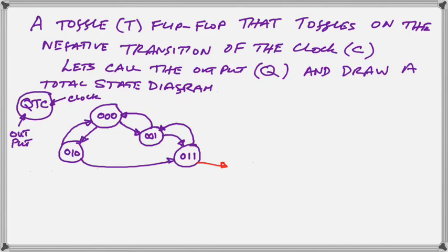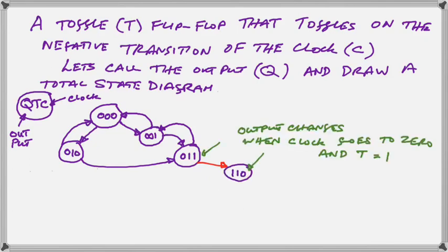So the next state that I have to draw is 110. My output has changed from a zero to a one, and my clock has gone from a one to a zero, which is the negative transition we were talking about. That should be fairly obvious if you study that.